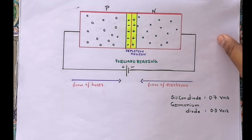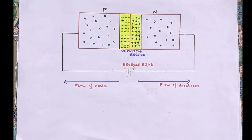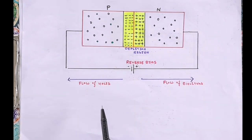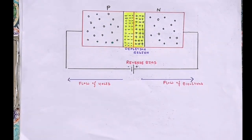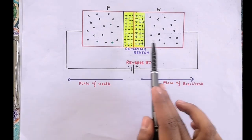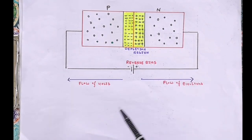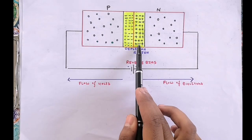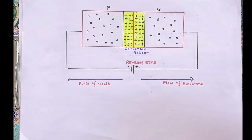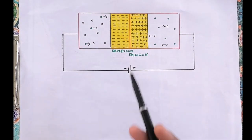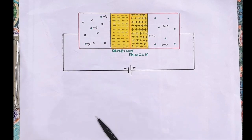Now let's see the working of a p-n junction diode in reverse bias. When the positive terminal of the battery is connected to the n-side and the negative terminal to the p-side, the diode is said to be reverse biased. In this condition, electrons in the n-region and holes in the p-region are attracted away from the junction. The number of positive ions in the n-region and negative ions in the p-region increases, making the depletion region wider, so no current flows.